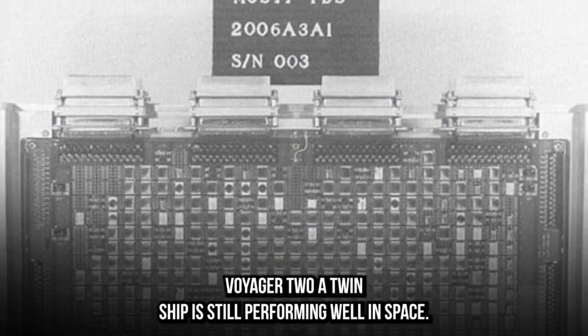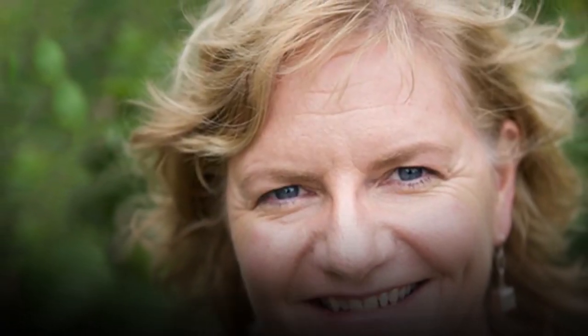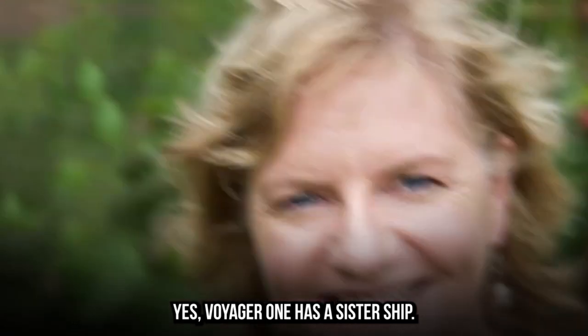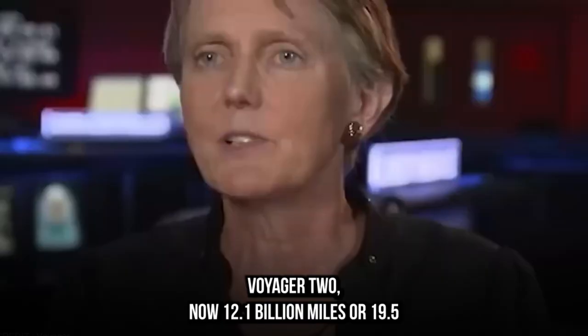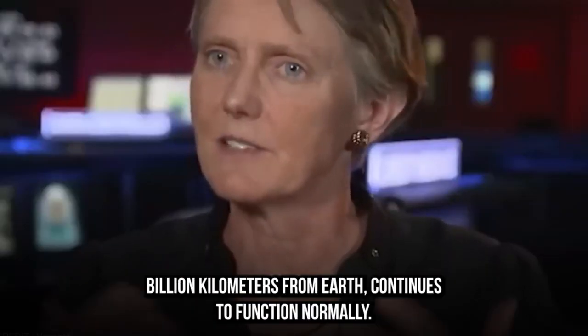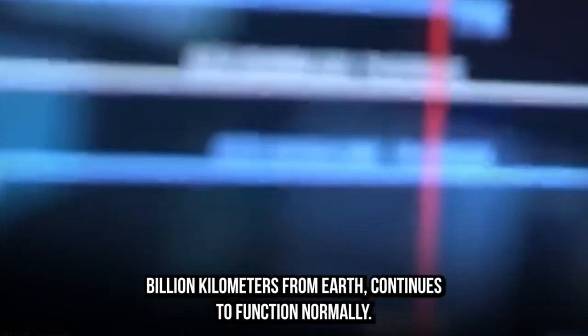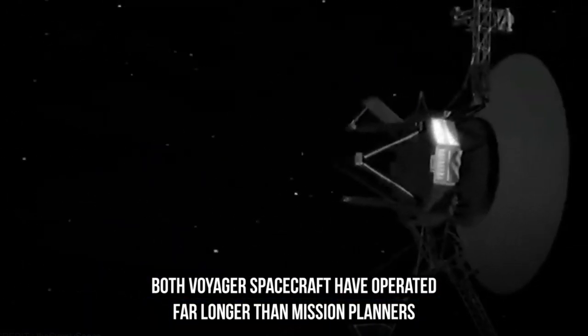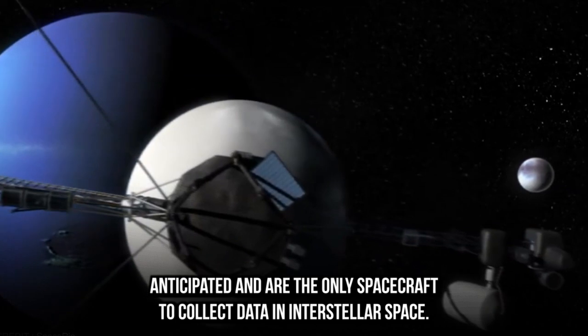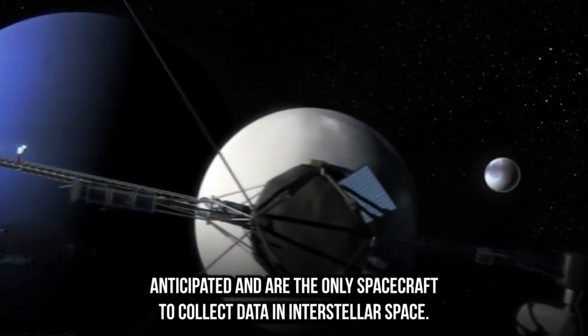Voyager 2, a twin ship, is still performing well in space. Voyager 2, now 12.1 billion miles or 19.5 billion kilometers from Earth, continues to function normally. Both Voyager spacecraft have operated far longer than mission planners anticipated and are the only spacecraft to collect data in interstellar space.